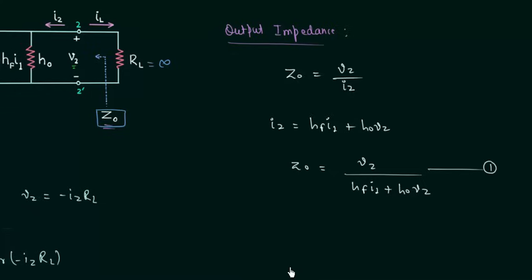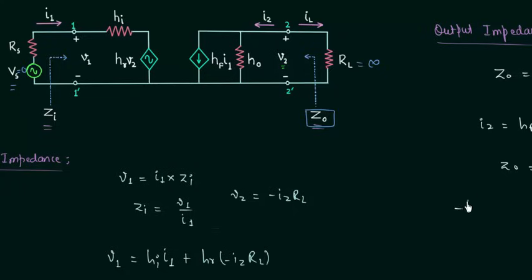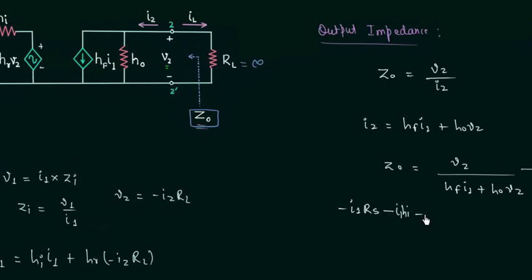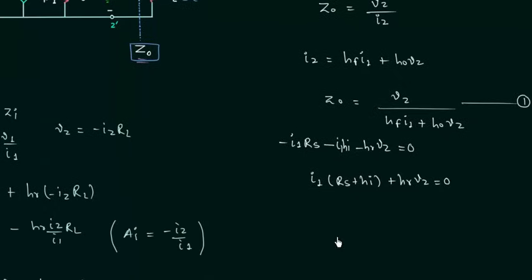Now to find a second equation, we apply Kirchhoff's voltage law in the input loop. With Vs equal to zero, KVL gives us: I1·Rs plus Hi·I1 plus Hr·V2 equal to zero. From this equation we can obtain the value of input current I1, which is equal to minus Hr·V2 divided by (Rs plus Hi).